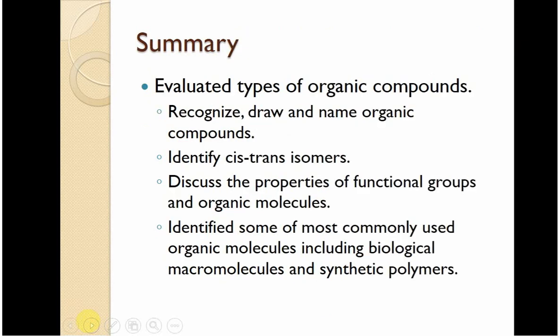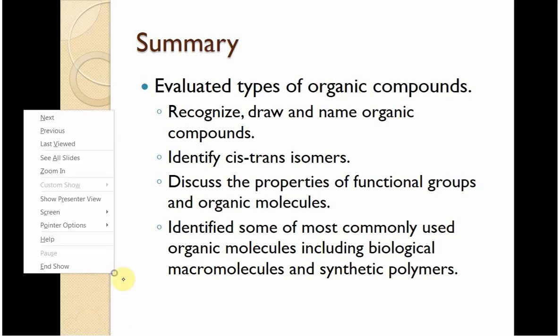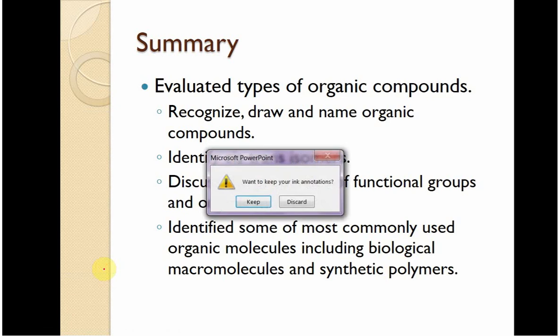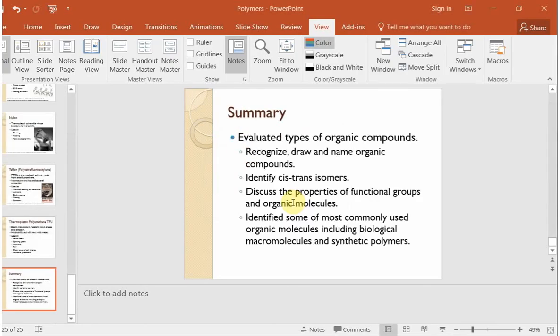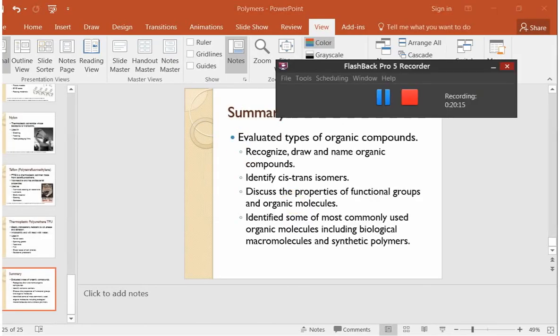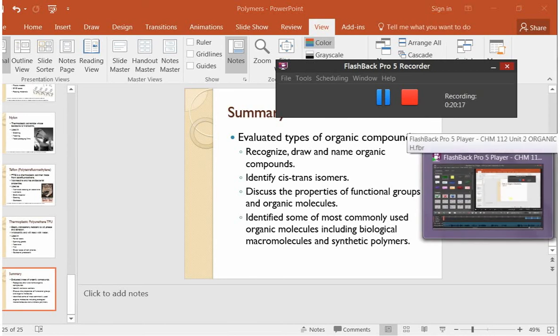So in terms of organic compounds, we have looked at how to recognize the different classifications. We've learned how to name them. We've looked at cis-trans isomers. We've talked about the properties of functional groups, and then we've really gotten into some of the macromolecules and synthetic polymers that you guys use all the time. I just wanted to pull all that back together as you move forward into your homework.